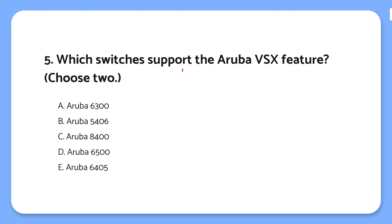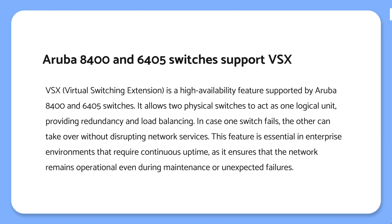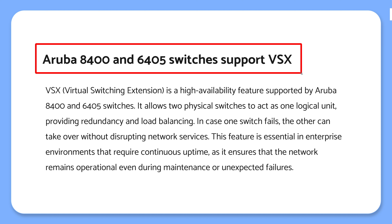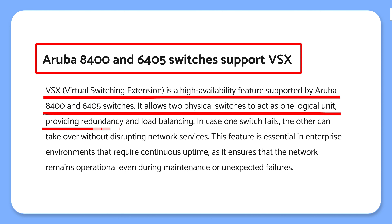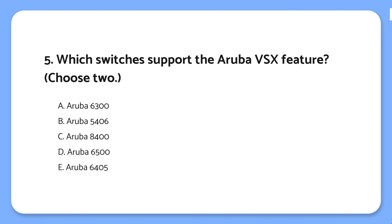Question 5: Which switches support the Aruba VSX feature? The knowledge point is that Aruba 8400 and 6405 switches support VSX. VSX allows two switches to work together as one, giving you redundancy — if one switch fails, the other takes over, so your network keeps running. Aruba 8400 and 6405 switches support this feature, making them great for high-availability environments. The correct answers are: the Aruba 8406/6405 switches support VSX, which keeps your network running by allowing two switches to act as one.